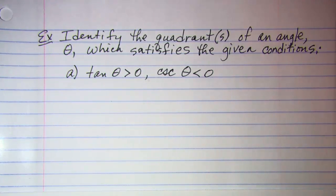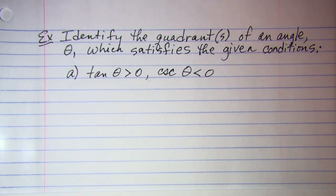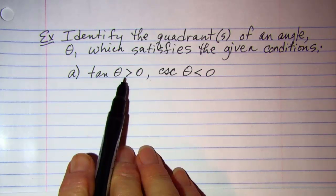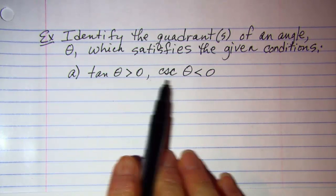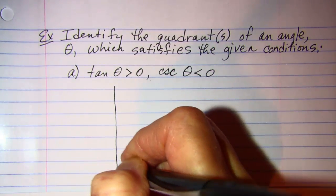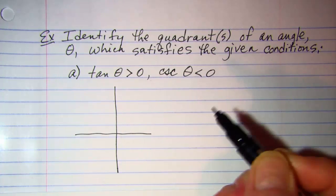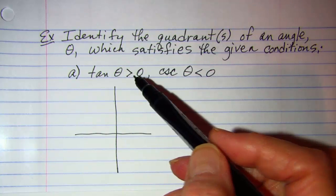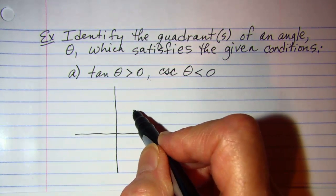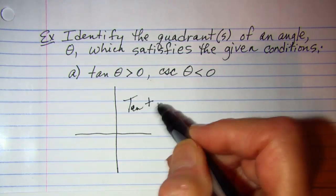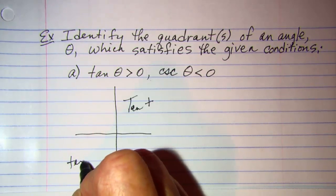All right, in this one we're identifying the quadrant of an angle theta which satisfies the given conditions. Tangent theta is positive and cosecant theta is negative. So I would draw my coordinate plane and indicate the two quadrants where tangent is positive. That would be tangent positive in the first quadrant and tangent positive here in the third.